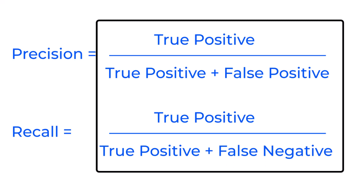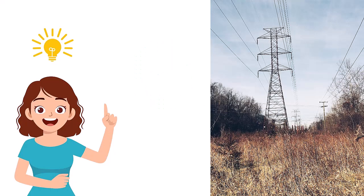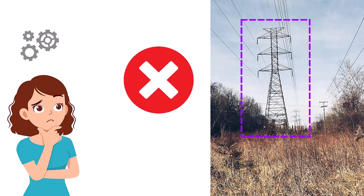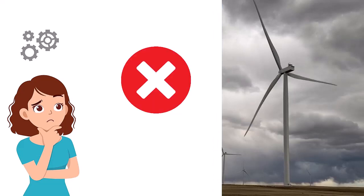True positive means the model predicted a wind turbine in an image, and the model was correct. True negative is when the model predicted a wind turbine was not in an image, and the model was correct. False positive means that the model predicted a wind turbine in an image, but the model was incorrect. Lastly, false negative is when the model predicted a wind turbine was not in an image, and the model was incorrect.